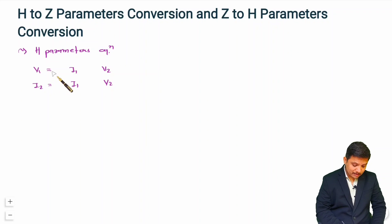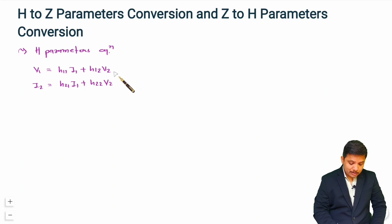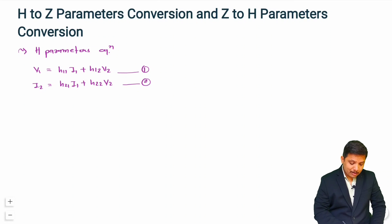So what is v1? v1 is h11·i1 plus h12·v2. And what is i2? That is h21·i1 plus h22·v2. That is how you remember the h-parameter equations, and that is very essential. So this is equation 1 and this is equation 2. Now let us write the z-parameter equations.